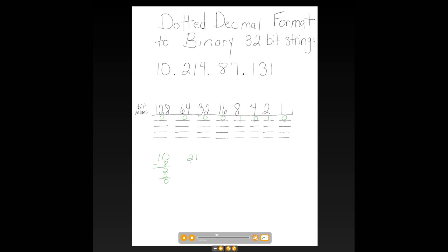Let's go to 214. 128 would be turned on. 214 minus 128 is 86. So 64 would be turned on. 86 minus 64 is 22. 32 would be turned off. 16 would be turned on. 22 minus 16 would leave us value of 6.